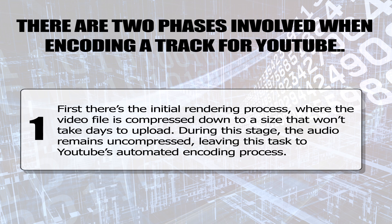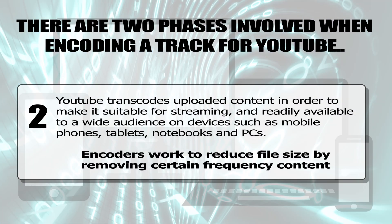There are two phases involved when encoding a track for YouTube. First, there's the initial rendering process where the video file is compressed down to a size that won't take days to upload. During this stage, the audio remains uncompressed, leaving this task to YouTube's automated encoding process. YouTube transcodes uploaded content to make it suitable for streaming and readily available to a wide audience on devices such as mobile phones, tablets, notebooks, and PCs.